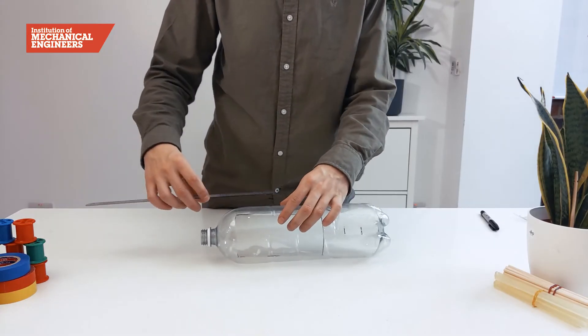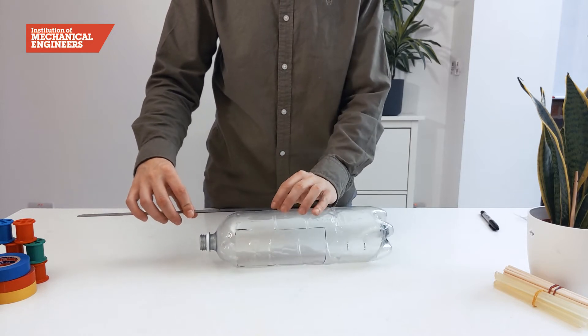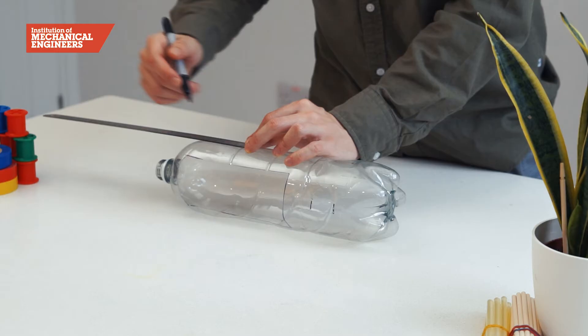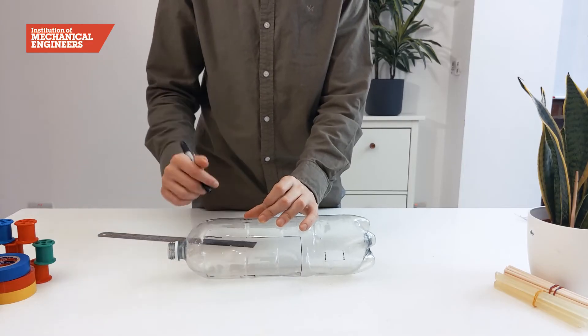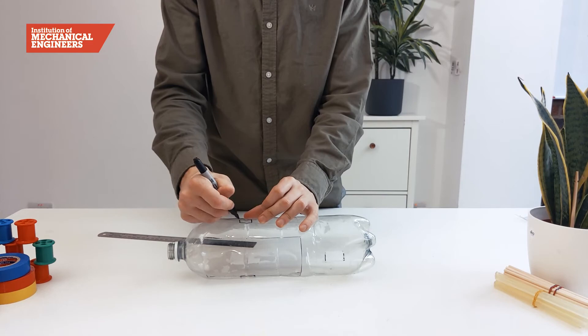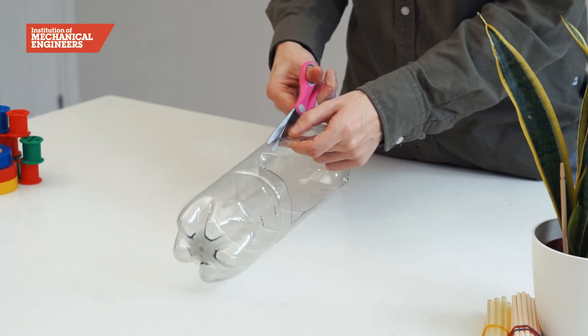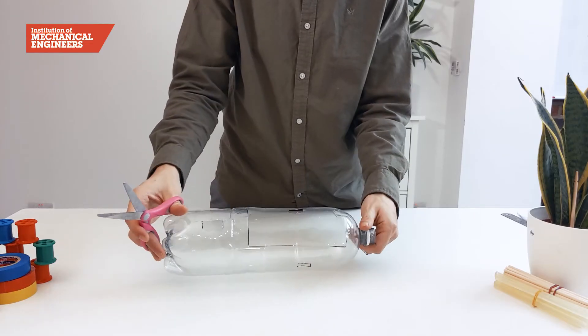Next we will make some holes for the dowel. Measure from the top of the bottle 12cm down and mark two small 2cm by 1cm slits in the side of the bottle. As before, use your sharp skewer and scissors to cut the slits.